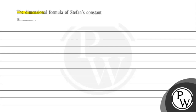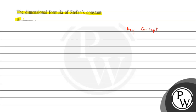The question asks for the dimensional formula of Stefan constant. As a key concept, we know the power radiated by a body is directly proportional to the area, the fourth power of temperature, and the emissivity of the body. To remove the proportionality, we use the constant which we call Stefan constant, Sigma.